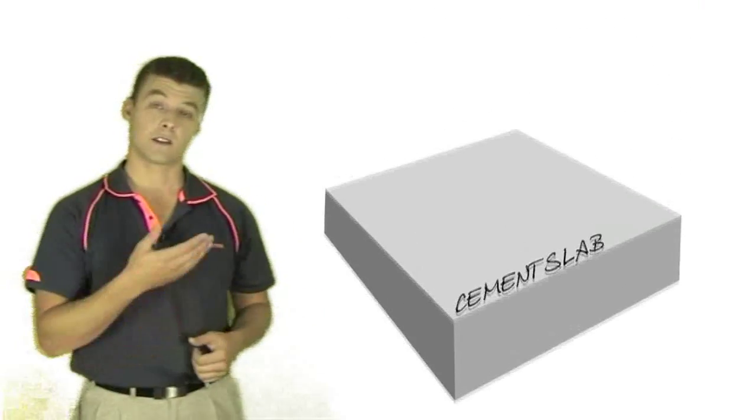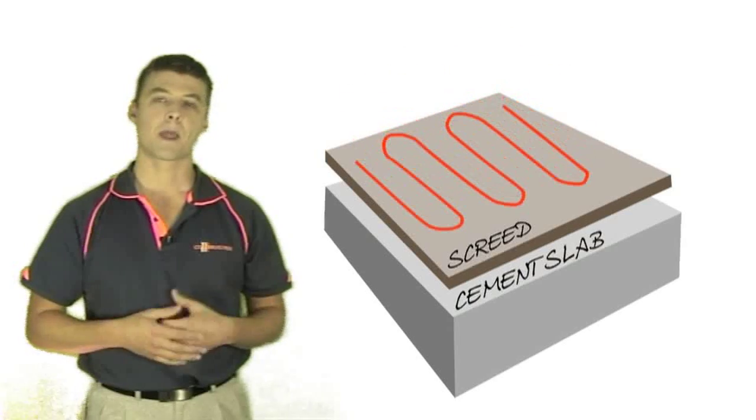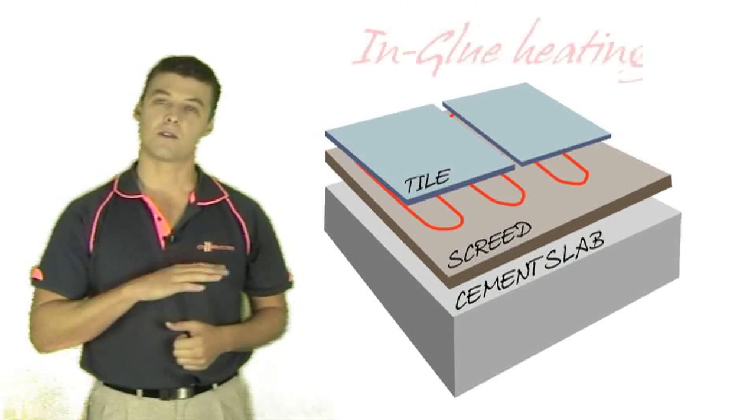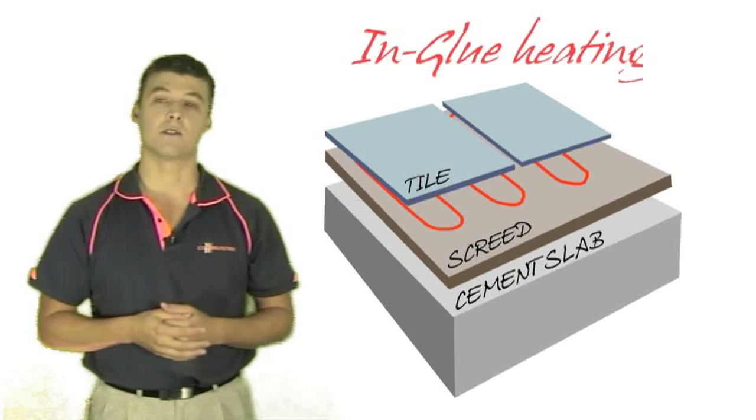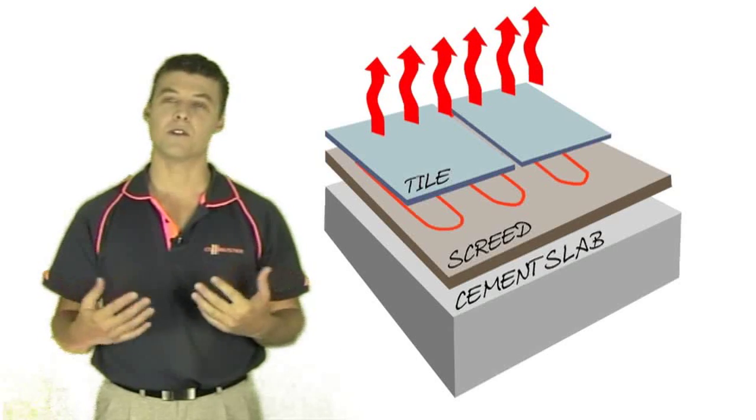With in glue heating the slab goes down then a tile bed if required and the thinnest cable is stuck down in the required shape and the floor finish is applied directly over it. This results in heat going directly through the floor and up into the room.